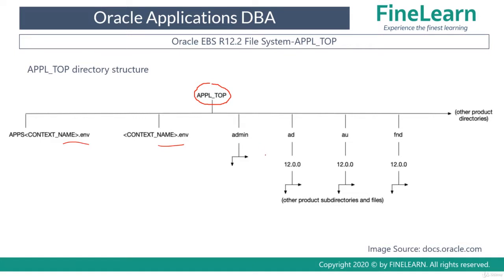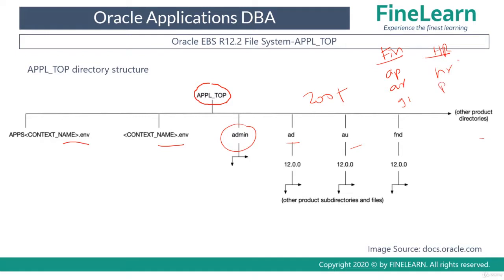Apart from the ENV files, we have several other important directories such as admin, AD, AU, FND, and many others. There are more than 200 directories in APPL_TOP because in Oracle E-Business Suite there are families and products — for example, in the Financials family we have products such as AP (Accounts Payable), Accounts Receivables, General Ledger, etc. Similarly, in the HR family we have the HR core module and payroll. All these 200+ modules each have one directory in APPL_TOP.